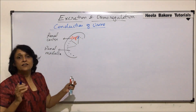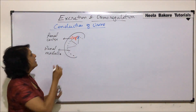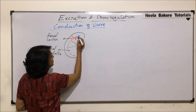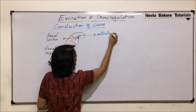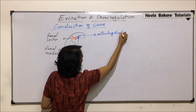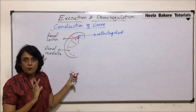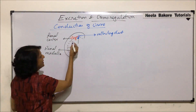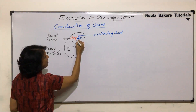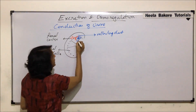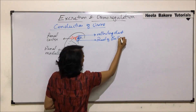Each collecting duct receives the filtrate from almost 8 to 10 nephrons. So this blue tube is the collecting duct, and it receives the DCT of approximately 10 nephrons. There would be multiple collecting ducts, and all these collecting ducts open together into one common tube, which is known as the duct of Bellini.